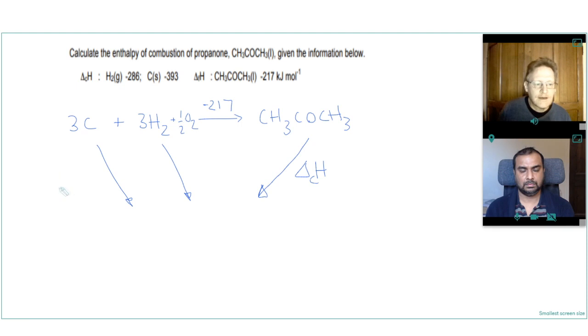And then our 3 times minus 393 for carbon goes here. And our 3 times minus 286 for hydrogen goes here. And we could write our combustion products as 3 CO2s and 3 H2Os.